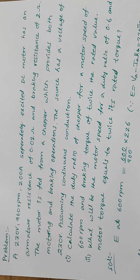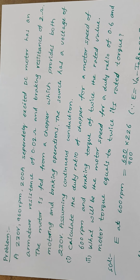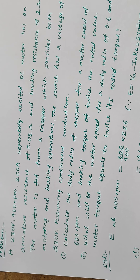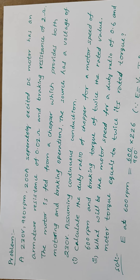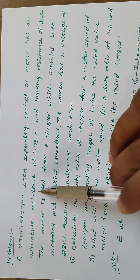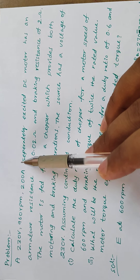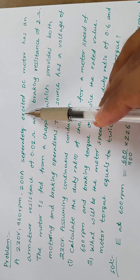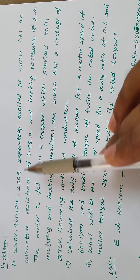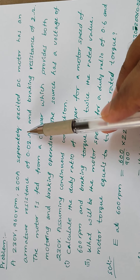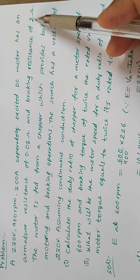Hi everyone. In today's session, we'll see a problem on chopper-fed DC drives for dynamic braking. The problem statement is: a 230 volts, 960 RPM, 200 ampere separately excited DC motor has an armature resistance of 0.02 ohms and a braking resistance of 2 ohms.